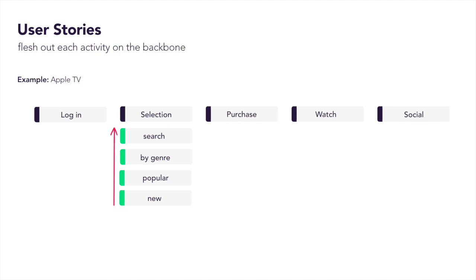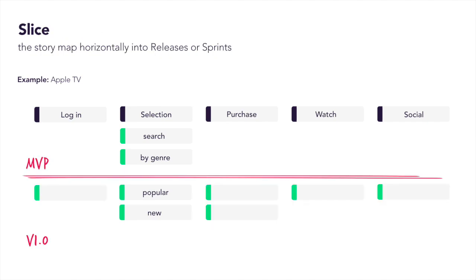Next, we must order our stories by value to our users, from most valuable to least valuable. Value may be identified through customer interviews, analytics on usage patterns, or another form of insight appropriate for your product or system. Once the team have identified their backbone and fleshed out each activity with user stories that have been ordered by value to the customer, it's time to sequence the work. The team identifies what they plan to deliver and when. What do we want to deliver in our MVP, our V1, or our V2?